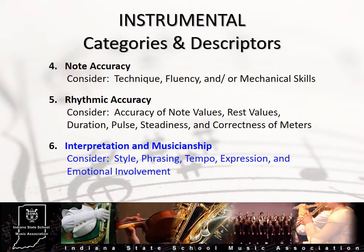Accuracy of tempo is very important in the interpretation of the music. If a piece is marked at quarter note equals 160 and the ensemble performs it at quarter note equals 100, that is a significant change to the character of the music. Slight variations to indicated tempo markings should not be seen as a big problem, as long as it doesn't change the character or intent of the piece. Expression and emotional involvement are those elements not necessarily indicated on the page, but are those things brought to life by the conductor and performers working together to make a musically pleasing moment for the audience. Remember to keep an open mind when evaluating this category, as there can be more than one way to interpret a piece.